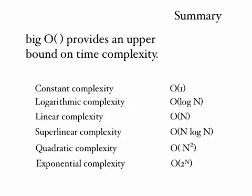So in summary, Big O notation provides an upper bound on the time complexity of an algorithm. Here are, again, the list of different types of complexity in increasing order.